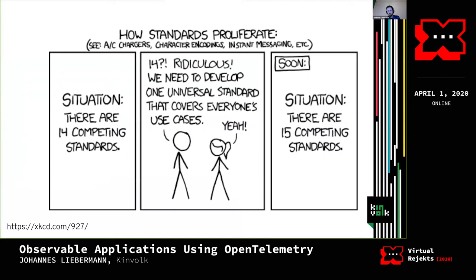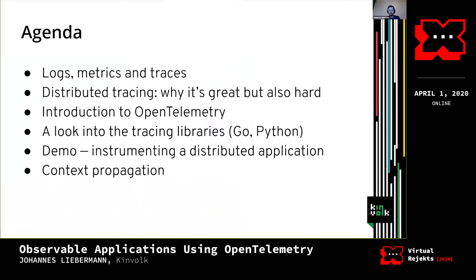We're going to talk about standards in this talk. Here's what we'll cover: a brief discussion of logs, metrics, and traces and their differences; a brief introduction to distributed tracing — why it's great but also hard; then an introduction to OpenTelemetry, the new open source standard. We'll look at the Go and Python tracing libraries, demo instrumenting a distributed application, and discuss context propagation.